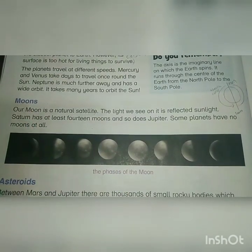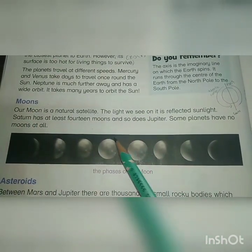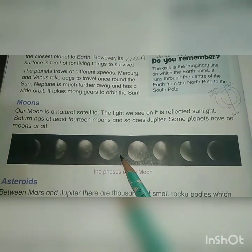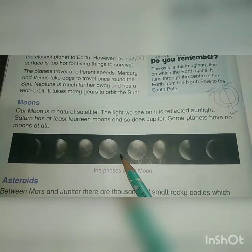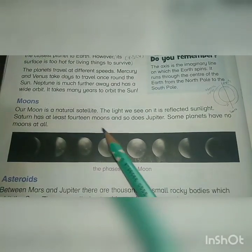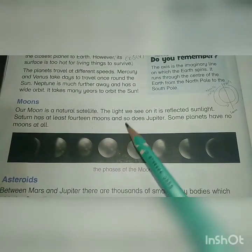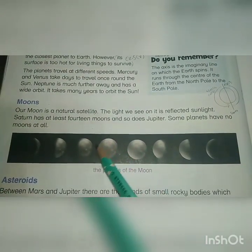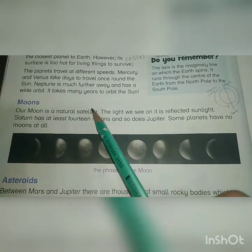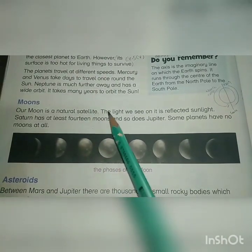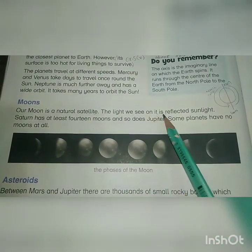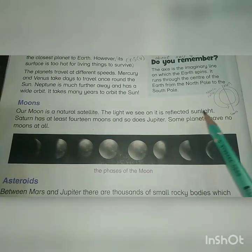Our moon is called a natural satellite because the moon revolves around the earth. Bodies which revolve around planets or the earth are called satellites. The light we see on the moon is reflected sunlight.